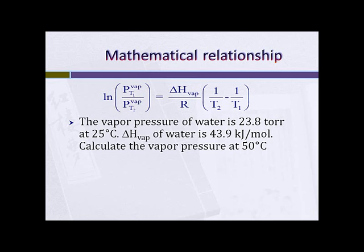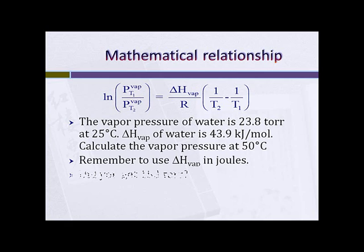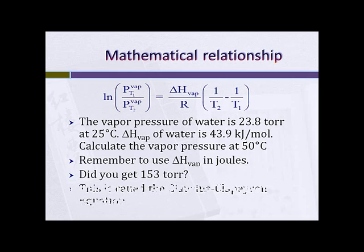We can also do some math with this. The vapor pressure of water is 23.8 torr at 25°C, and the ΔH_vap of water is 43.9 kilojoules per mole — what's the vapor pressure at 50°C? Remember that R is 8.314 joules per mol·K, and ΔH_vap was given in kilojoules. The correct answer is 153 millimeters of mercury. This equation is the Clausius-Clapeyron equation, and it has been used to determine ΔH values of vaporization by measuring pressure at two different temperatures.